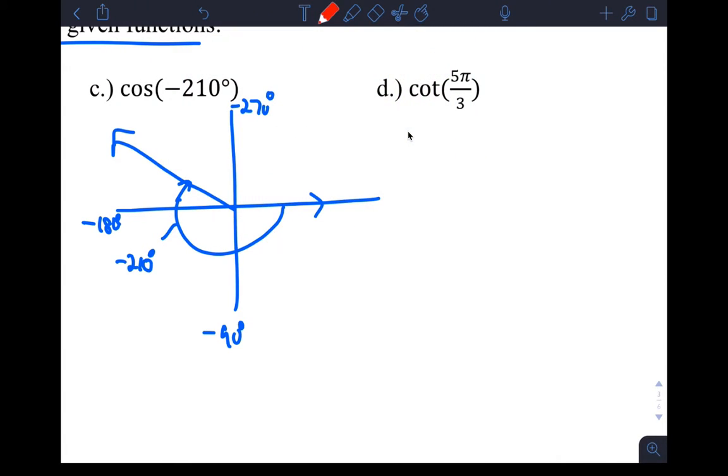And then your reference angle here, theta prime, is basically this distance here. How far am I away from the x-axis? And the answer for that is 30 degrees. You're 30 degrees away from the x-axis.